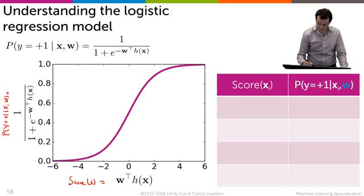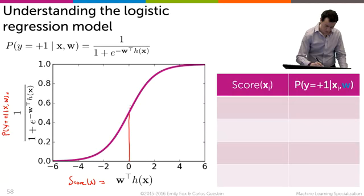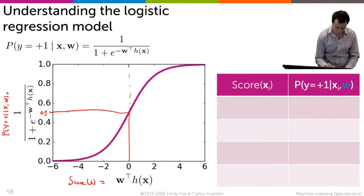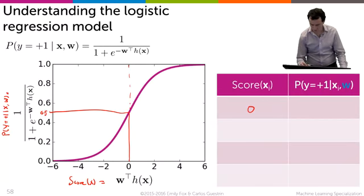Now if the score is 0, and I'm going to draw it like this, we have that this probability is 0.5. So if the score is 0, the probability is 0.5.